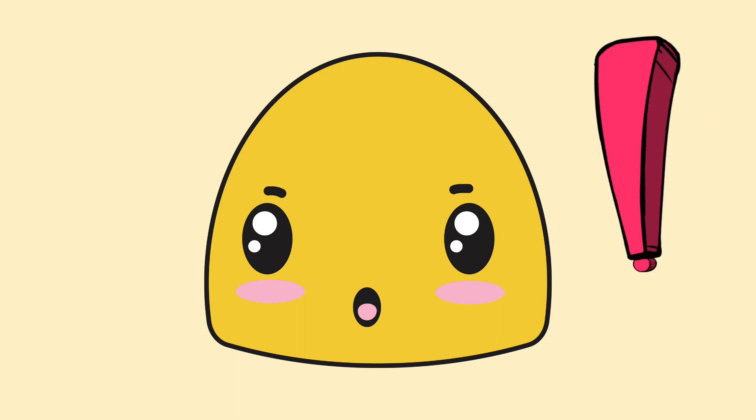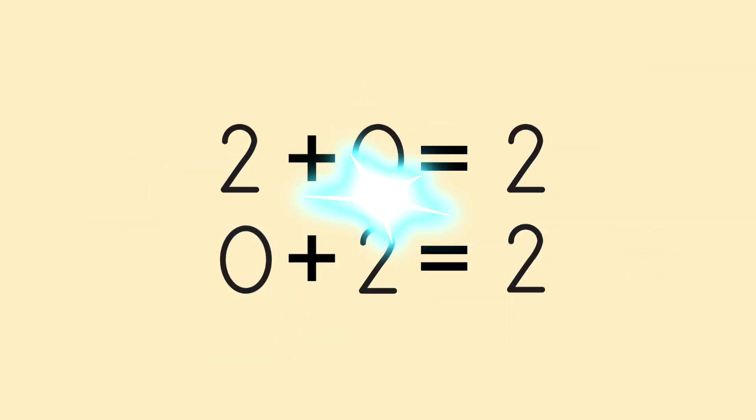Emily noticed something cool about the addition facts. When you add 0 to any number, the number stays the same. This quality has a special name. It's called the identity property of addition.